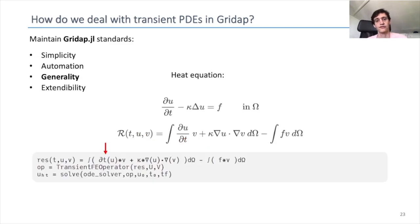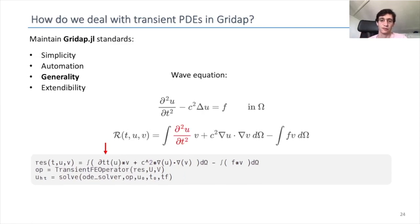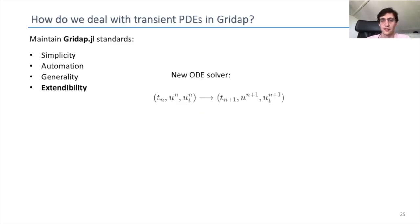Another important feature of Gridapp is generality. That means that if we have the heat equation, given as a first-order ODE, we have the partial_t operator representing the first-order derivative. When we have a second-order problem, we want to keep the same approach, and in that case we use partial_t as the second derivative with respect to time of the unknown.